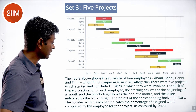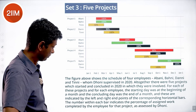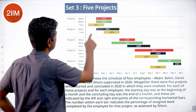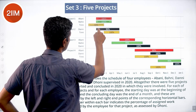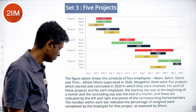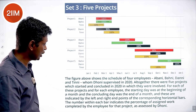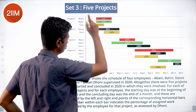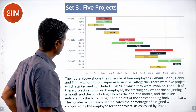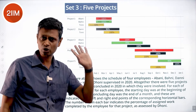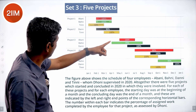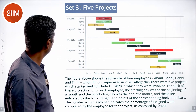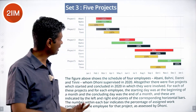For each of these projects and for each employee, the starting day was the beginning of a month and the concluding day was the end of a month, indicated by the left and right endpoints of the corresponding horizontal bar. This is Jan-Feb, Feb-March, and so on. The number within each bar indicates the percentage of assigned work completed by the employee for that project as assessed by Dhoni. So Dhoni says Dhani did 90% of the work in those three months, Abani did 100% in those two months in project three, and so on. Abani is red, Bhani is green, Tinni is yellow, and Dhani is black.